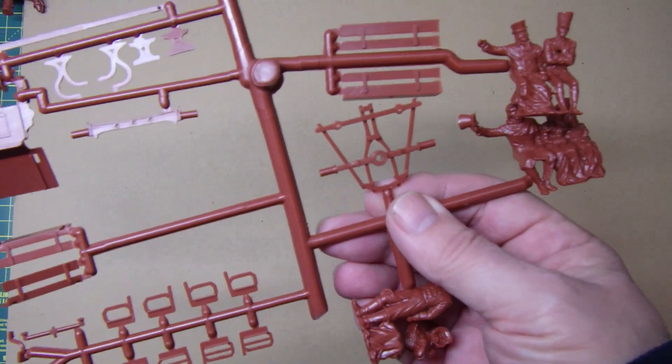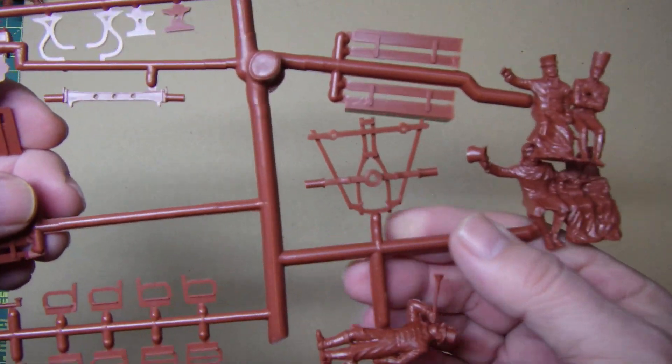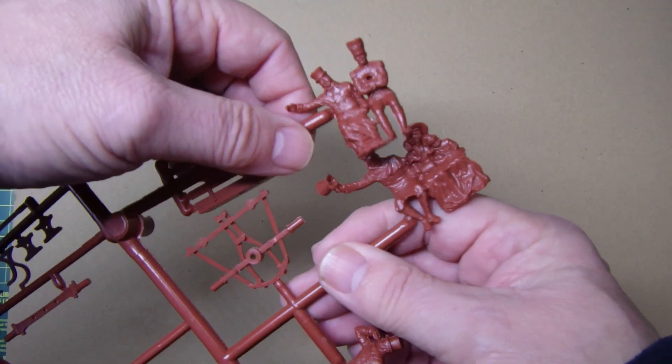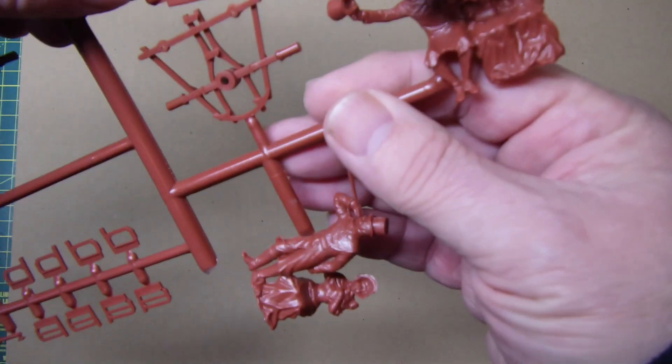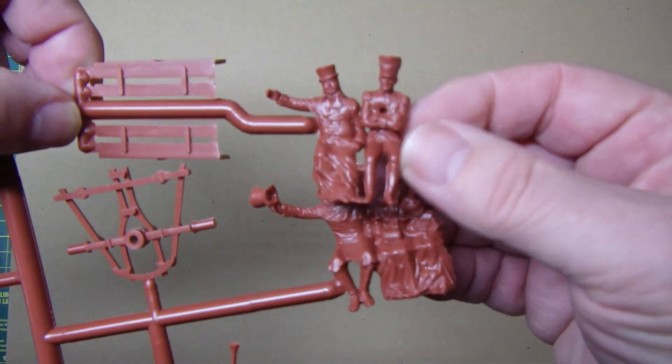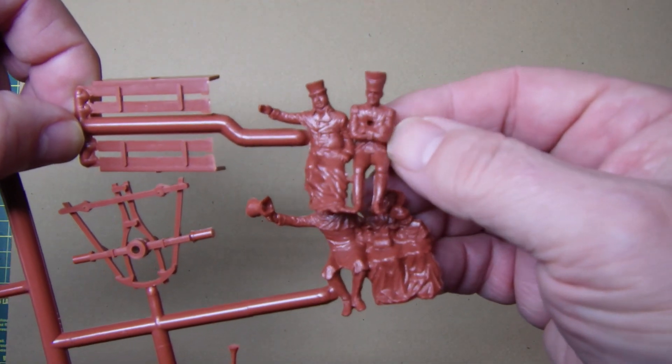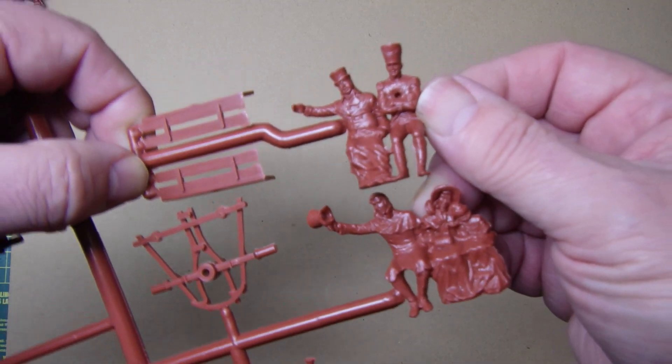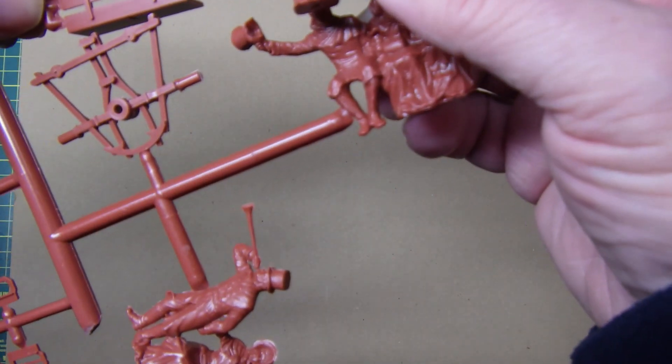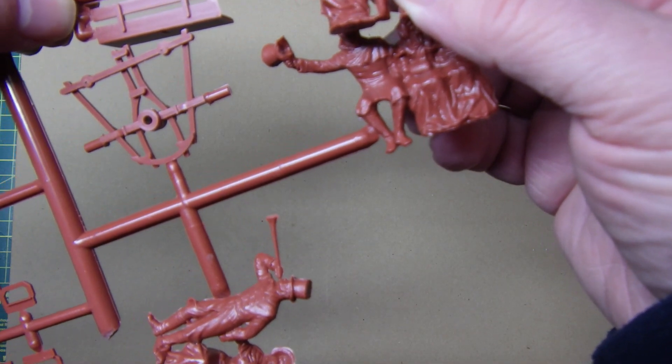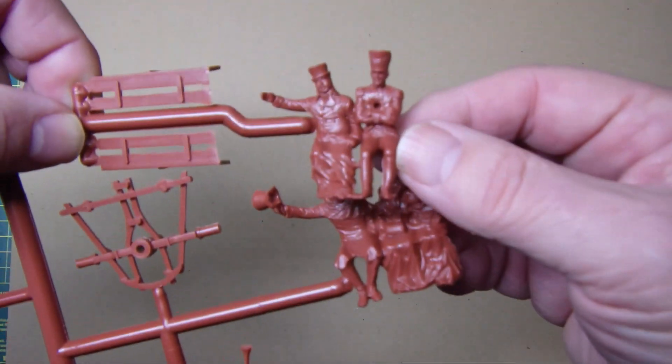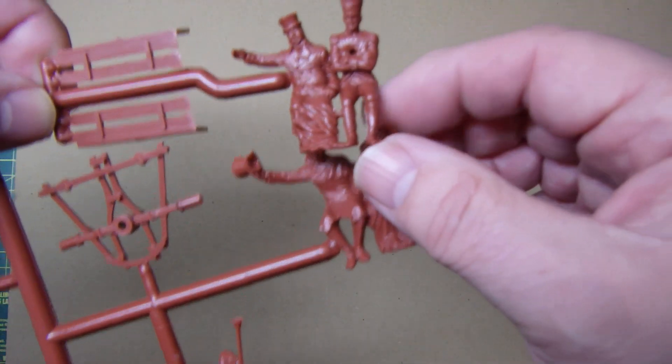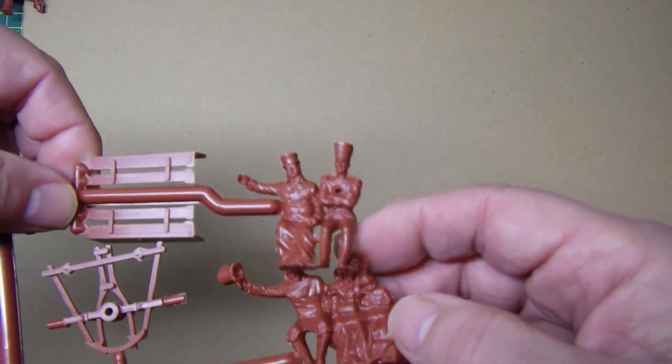The next sprue or tree as they used to be called, interesting figures. That's a bit of a shame, the guy looks like he's been shot in the chest, so depending on how it all goes together, we're probably going to have to fill that. He's got a sink mark right in the chest.